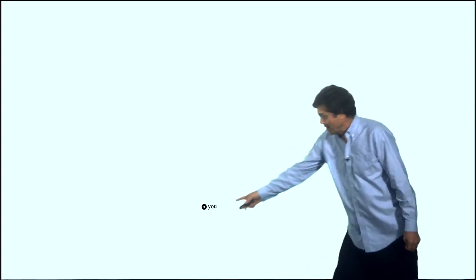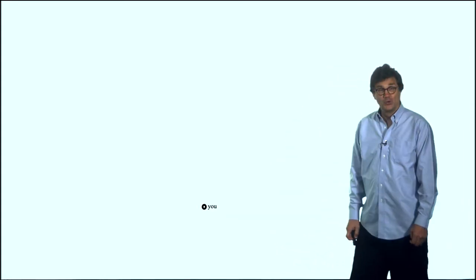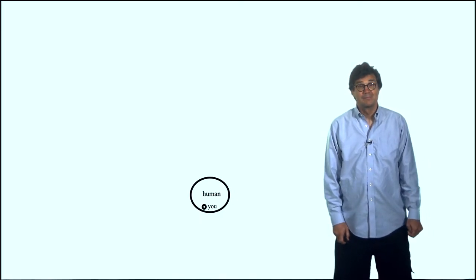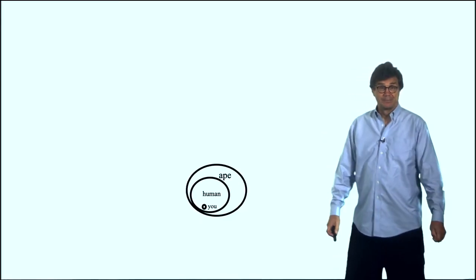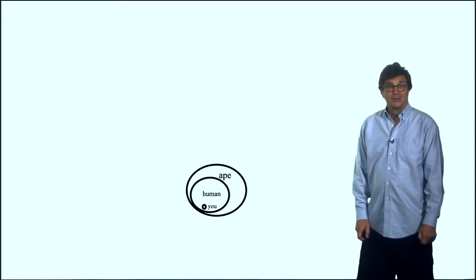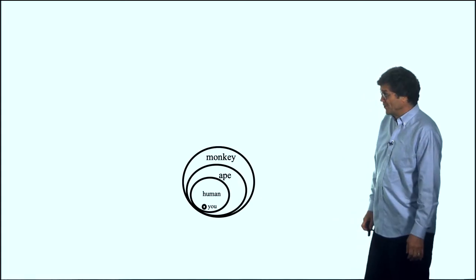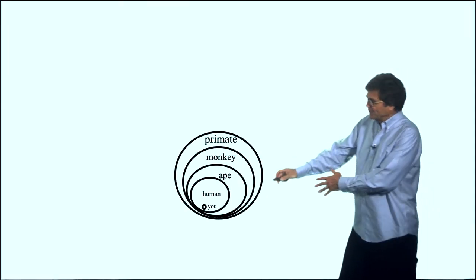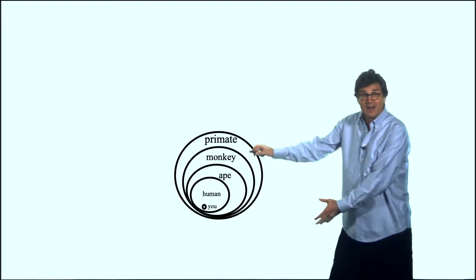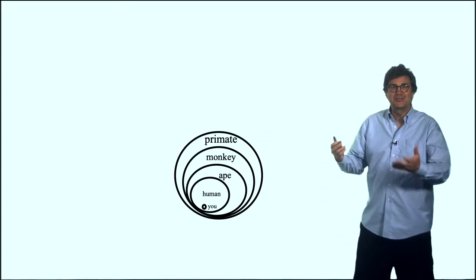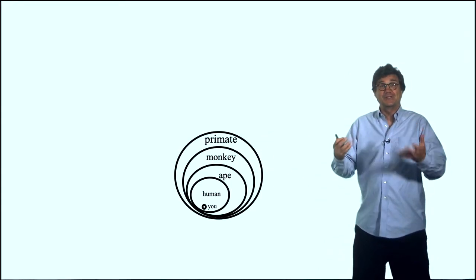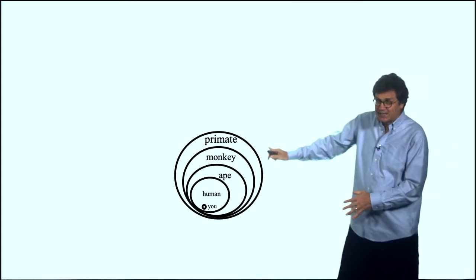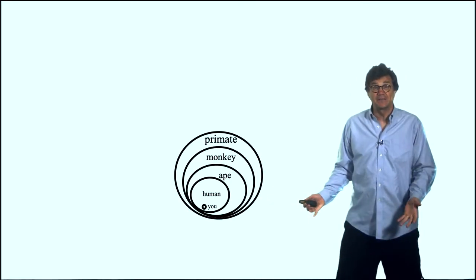Here you are. You are a human. You are an ape. You are a monkey. You are a primate. We're starting to build up an onion of identity here, a phylogenetically tree-based biological passport. And we're skipping lots of layers here.